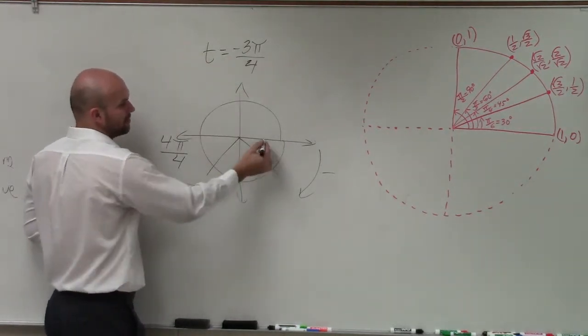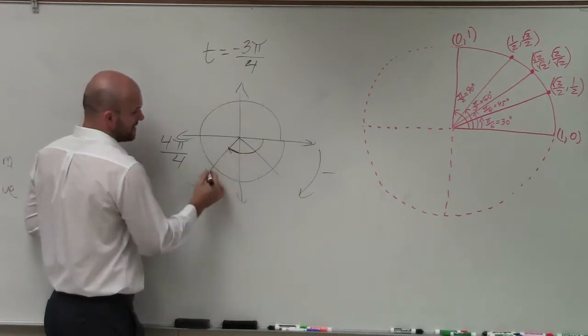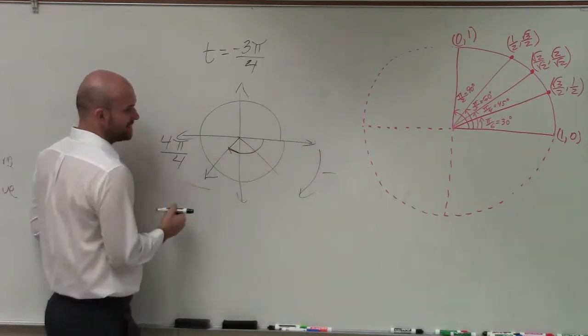So it says negative 3π over 4. Well, that's 1π over 4, 2π over 4, negative 3π over 4. So that's going to be my terminal side, as this is my initial side.